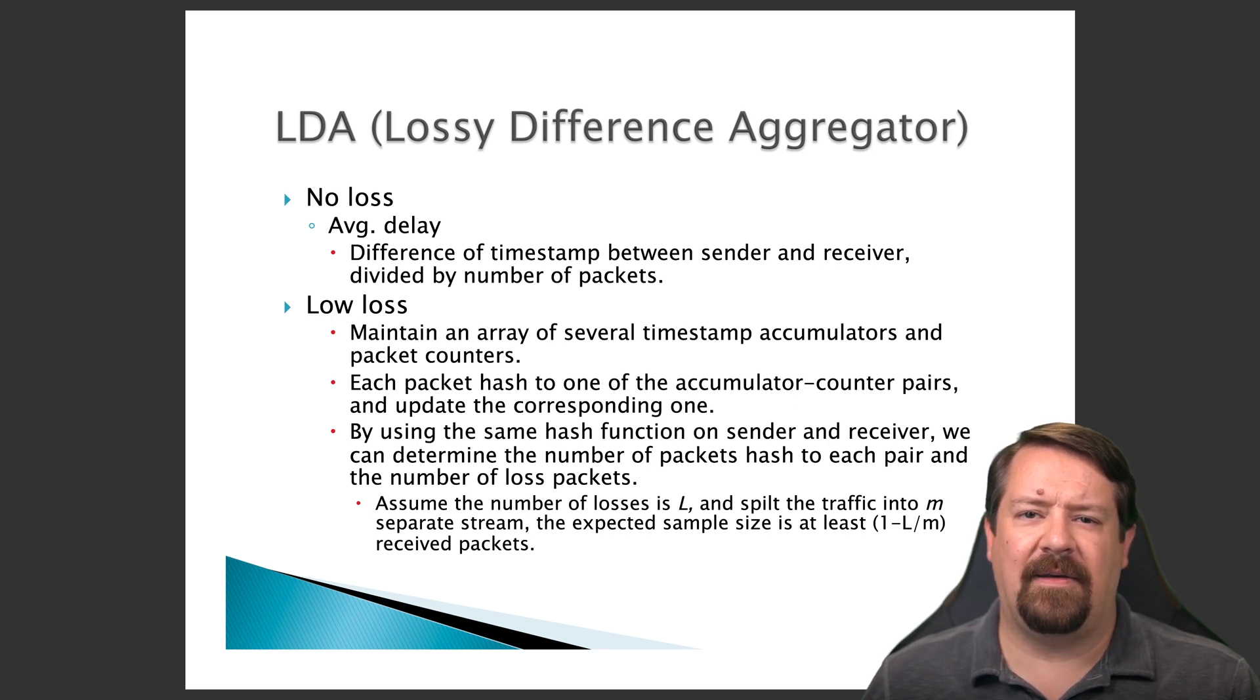Each end of the connection can make sure that the same packets are mapped to the same accumulators by using a hash function. This hash function is a similar approach to what we saw in the minimalist approach to flow measurement in the flow sampling approach.